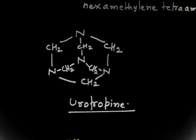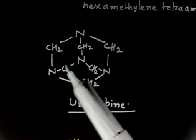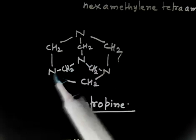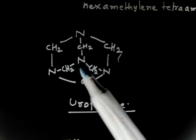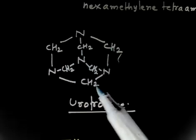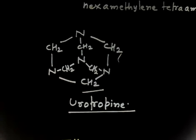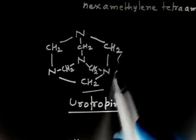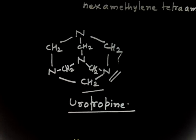The common name is more popular. To write the structure, you write a skeleton like a benzene ring with alternating nitrogen and carbon, and you put nitrogen in the middle and connect it to the other nitrogens by CH2 groups. You have one, two, three, four nitrogens - that is the tetramine. You have one, two, three, four, five, six carbons - that is hexamethylene. So this is hexamethylenetetramine. The common name is more popular, so you just have to remember this reaction.